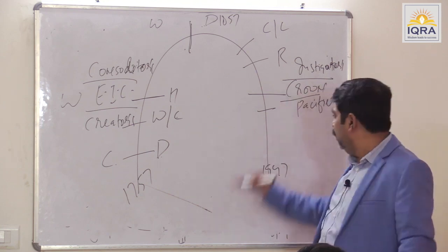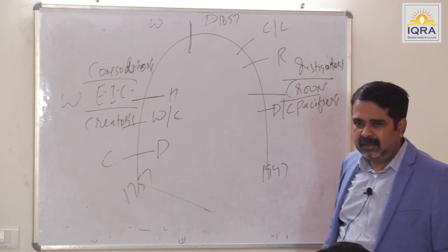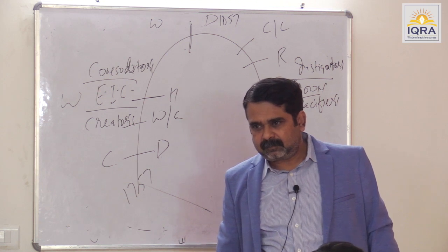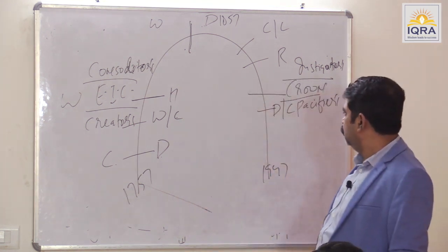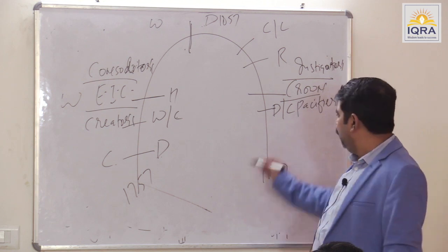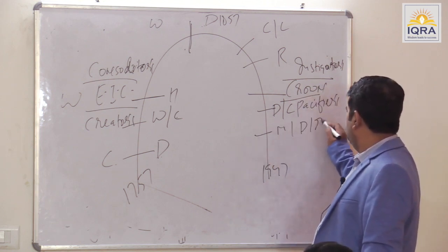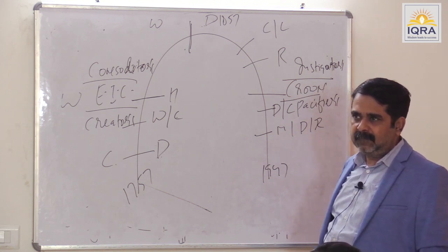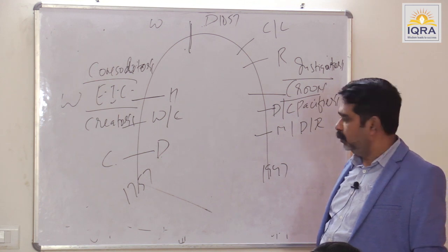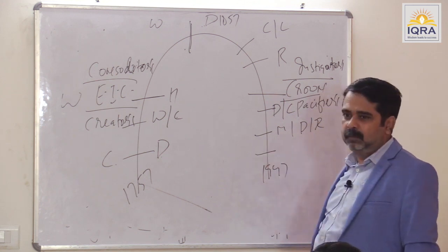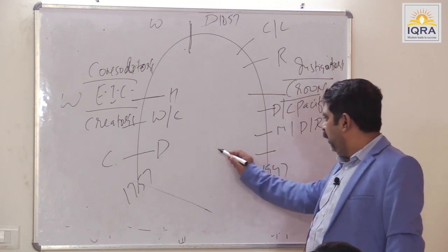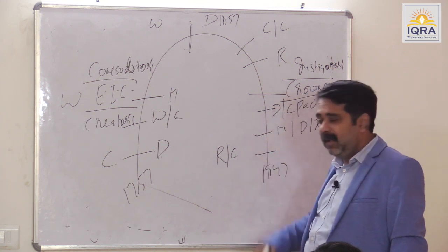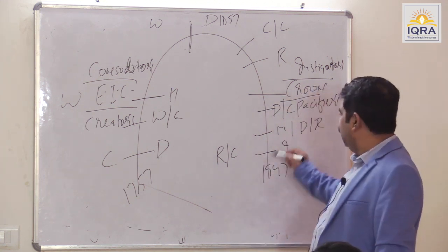Dufferin and Curzon are also instigators. Minto used divide-and-rule policy. Reading transferred power. Irwin was a pacifier.